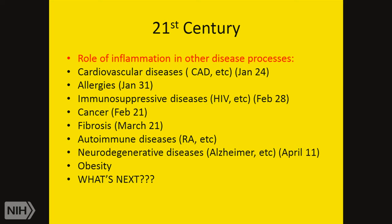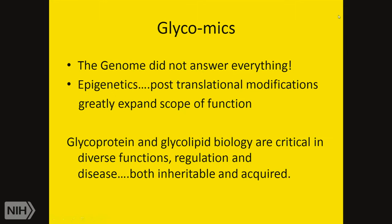Last week we heard about cardiovascular disease from Dr. Gallon. This week allergies are one of the main topics. In February we'll cover immunosuppressive diseases, HIV, cancer, fibrosis, autoimmune conditions, neurodegenerative disease, and obesity. It's almost as if every area of clinical medicine has an important component related to inflammation and the complex inflammatory cycles that take place, as well as the host responses and the complexities of the immune system.